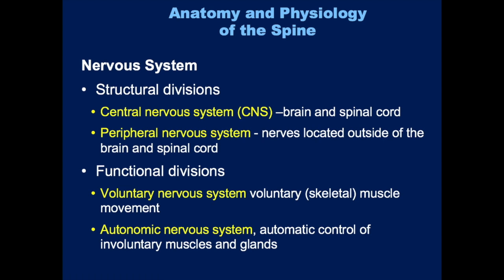The spinal cord carries all of the messages to and from the brain and between the different parts of the body through these nerve bundles. Functionally, you can divide it into two divisions: the voluntary nervous system, which controls all the muscles you can consciously move — your arms, your legs — and the autonomic nervous system, which controls all the involuntary muscles and glands, like those in your stomach, intestines, and various glands.